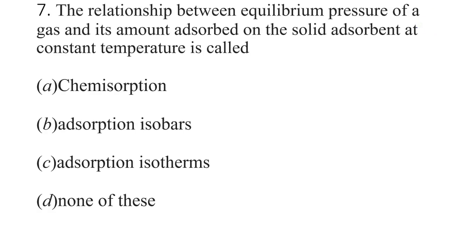The next question: the relationship between the equilibrium pressure of a gas and its amount adsorbed on the solid adsorbent at constant temperature is called — chemisorption, adsorption isobar, adsorption isotherm, or none of these? The answer will be C — adsorption isotherm.